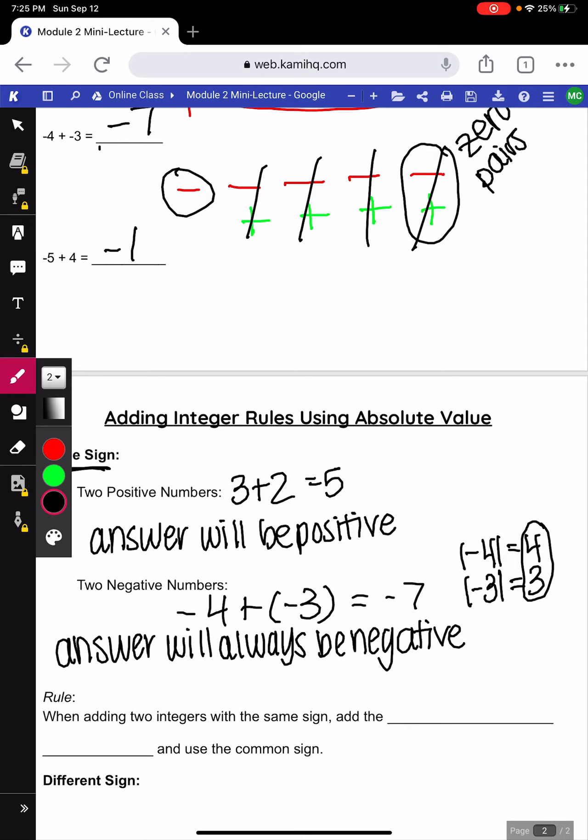So, our rule for adding integers with the same sign, we always add the absolute value. As I just showed, you can do the same thing with the positive, you'll get the same answer. And use the common sign. So, if it was two negative numbers, you use the negative sign. Two positives, you leave it positive.